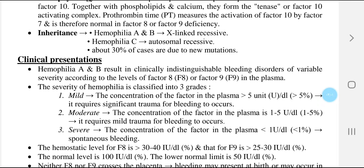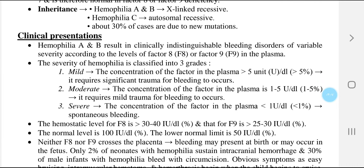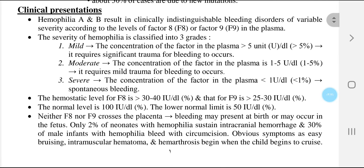Second, moderate — the concentration of the factor in the plasma is about 1 to 5%, so mild trauma is required for bleeding to occur. Third, severe — where the concentration of the factor in the plasma is less than 1%, so there will be spontaneous bleeding.